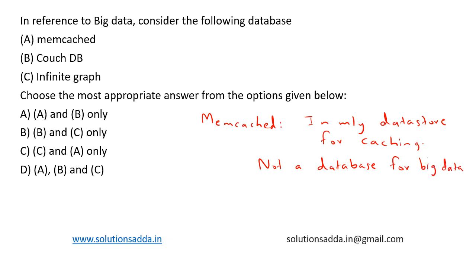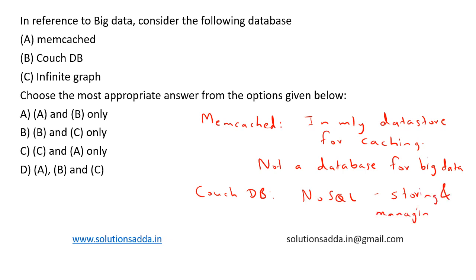Now let's see what CouchDB is. CouchDB is a NoSQL database that can be used as a primary database for storing and managing big data. It is a document-oriented database that can handle large volumes of data efficiently.